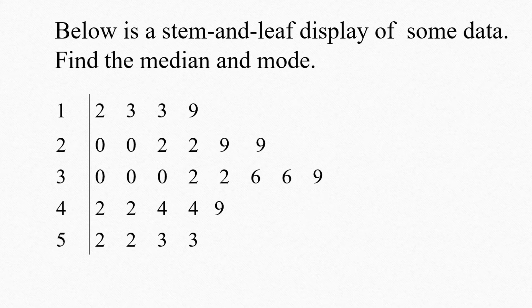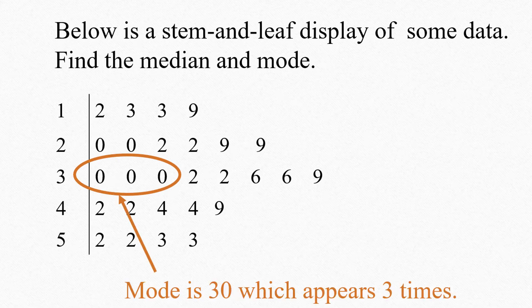And if you look in the third row, we see three zeros in a row. So there are three 30s in a row. Nowhere else in a single row do we see the same three digits right in a row. So 30 is actually the mode of this data set.